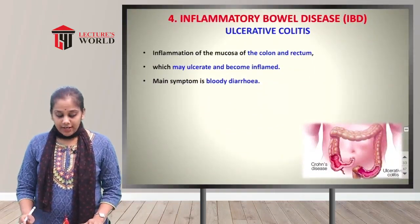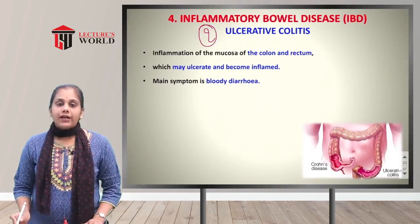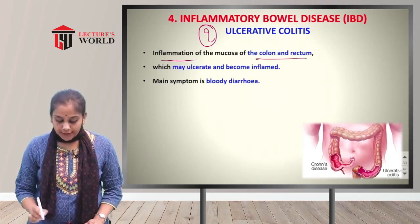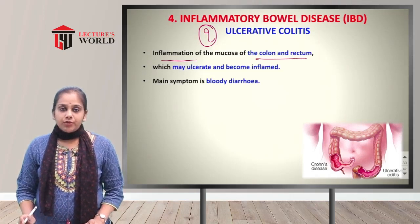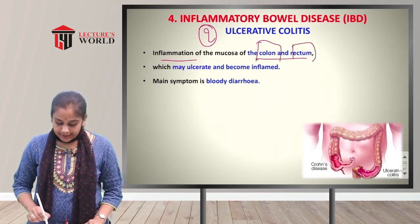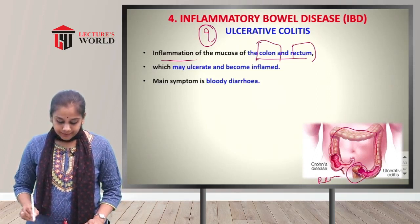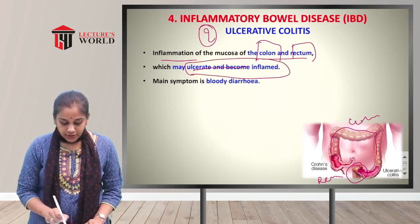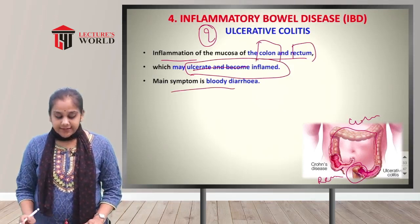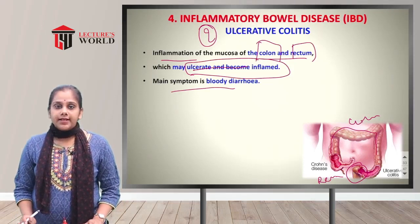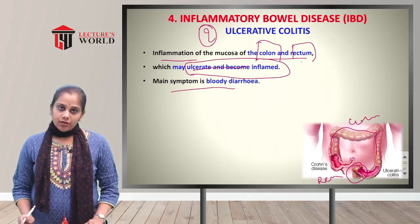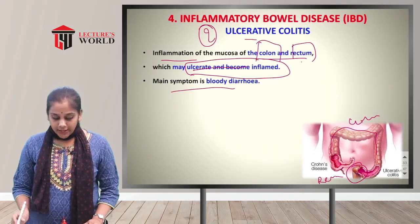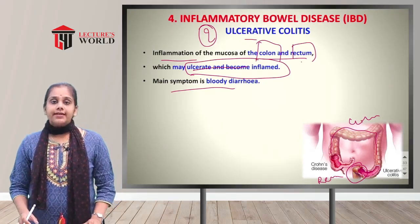The second type of inflammatory bowel disease is ulcerative colitis — inflammation of the mucosa of the colon and rectum, which may ulcerate and become inflamed. The main symptom is bloody diarrhea, because there are ulcers in the mucosal lining of the rectum and colon. Ulcers are most commonly found in the colon and rectum — this condition is known as ulcerative colitis.